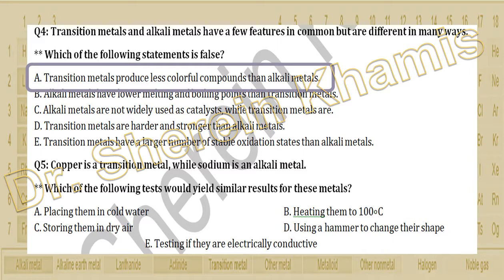Question 5: copper is a transition metal while sodium is an alkali metal. Which of the following tests would yield similar results for these metals? We want a common property between copper as a transition metal and sodium as an alkali metal. The first option is placing them in cold water.